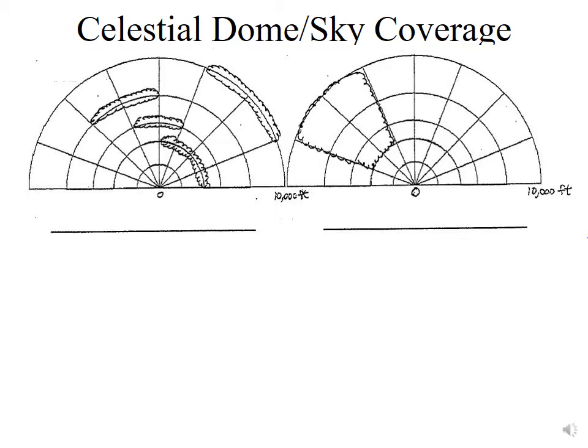We have no clouds at the surface or at 2,000 feet. The first cloud layer occurs at 4,000 feet above ground level, covering four-eighths of the sky — four quadrants out of eight. An observer at the ground looking up sees exactly half the sky filled with clouds at this elevation. Four-eighths falls into the scattered category, SCT, and we describe the altitude as SCT 040.